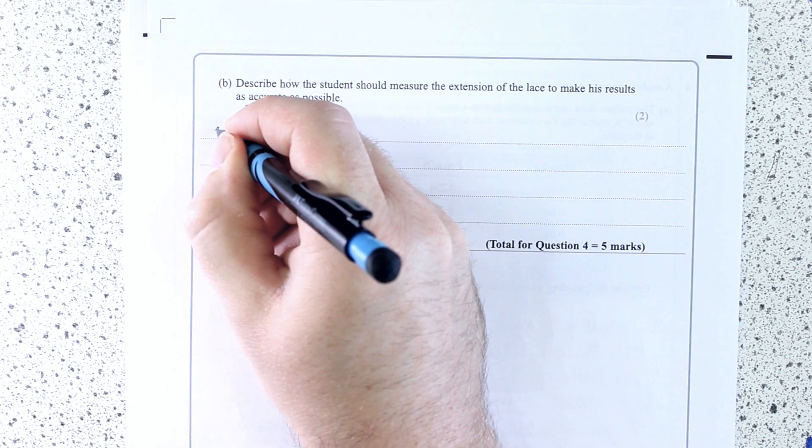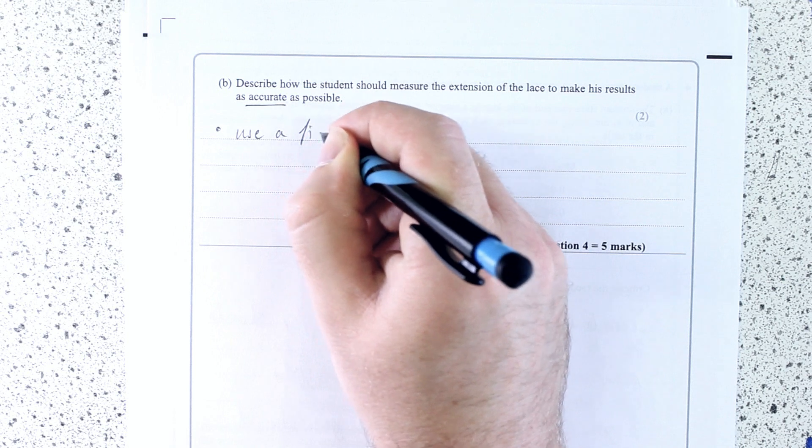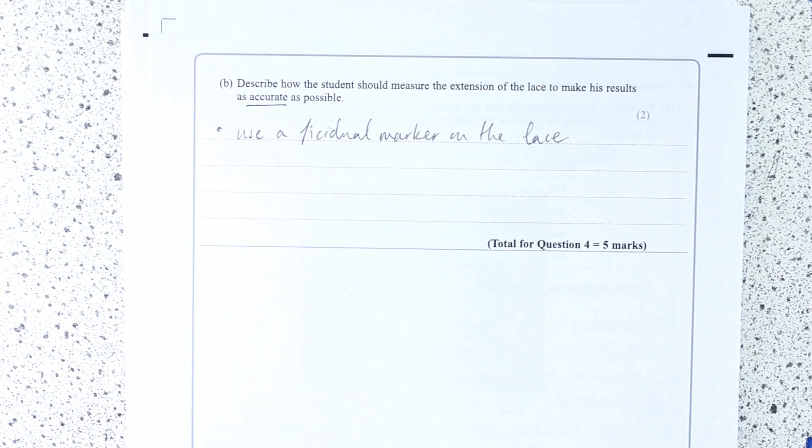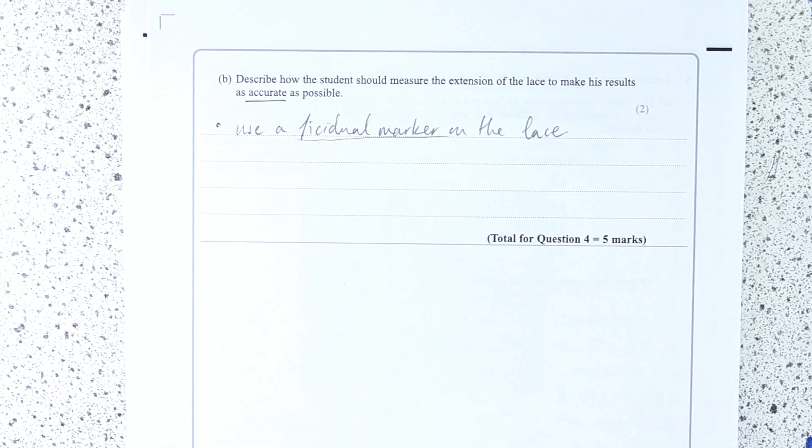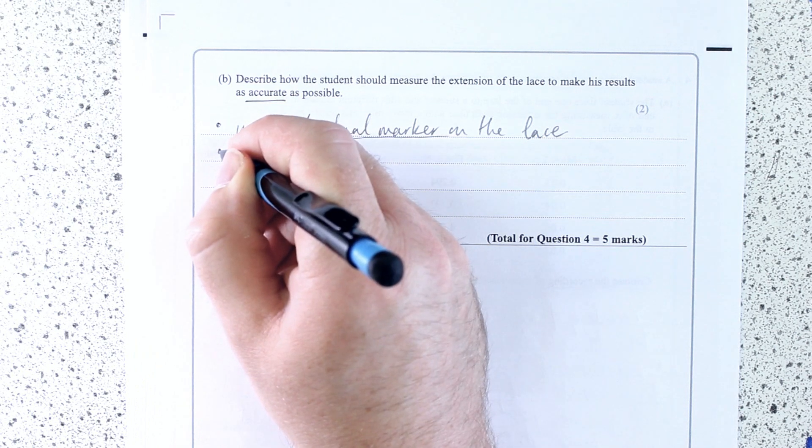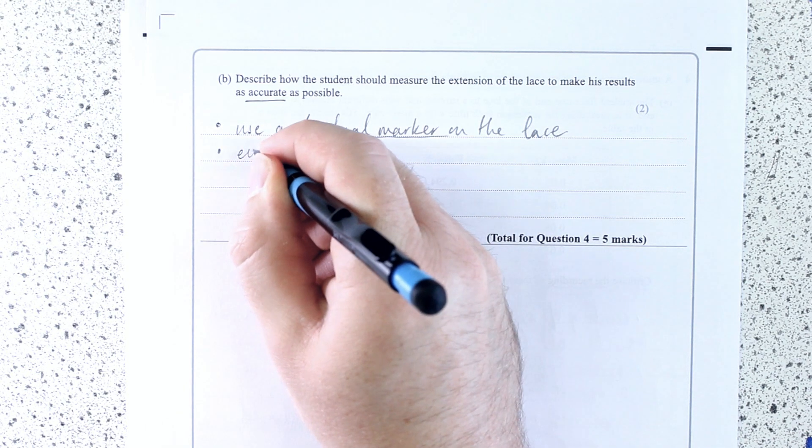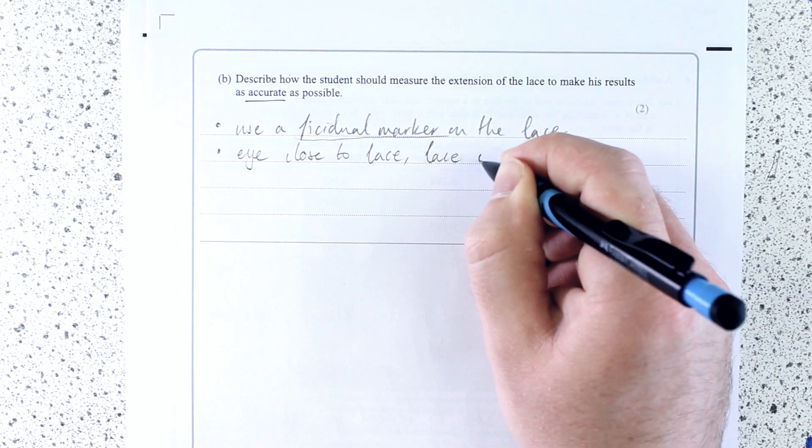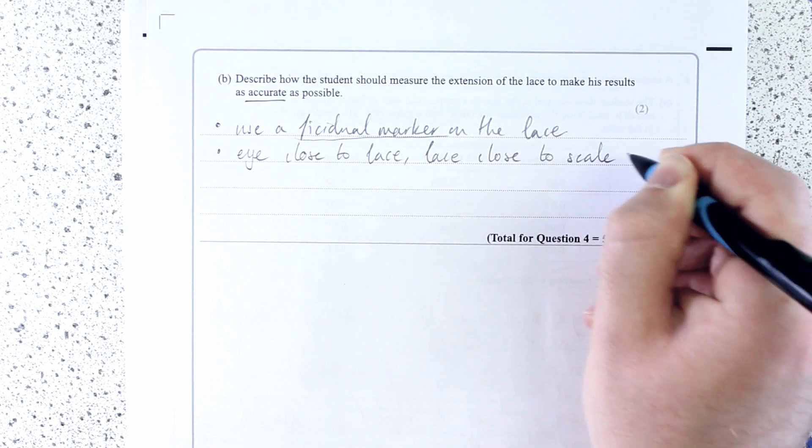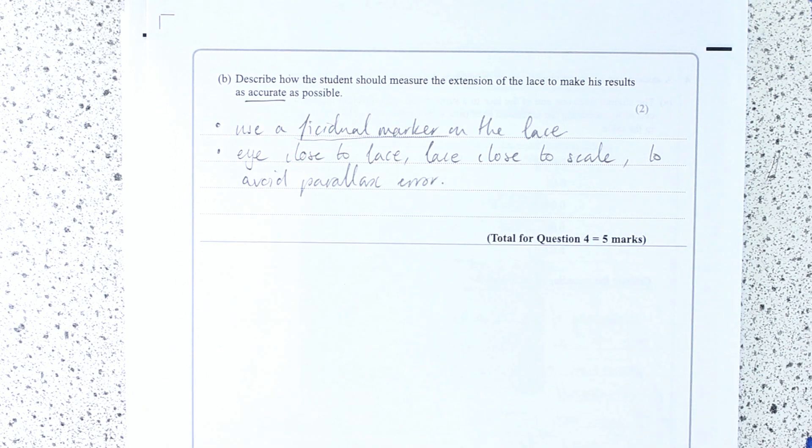Well, the most obvious ones is to use a marker, and we call it a fiducial mark. That's literally like a little flag, a little marker, anything that helps you to make sure that you're reading from the exact same position. That's one possible one. Get your eye close to the scale and get the lace close to the scale as well. So, eye close to lace, lace close to scale. What is that about to avoid parallax error? I think those are maybe two of the most obvious ones.